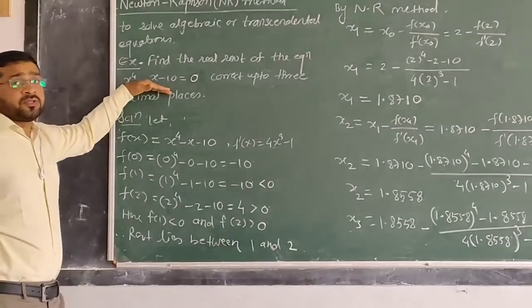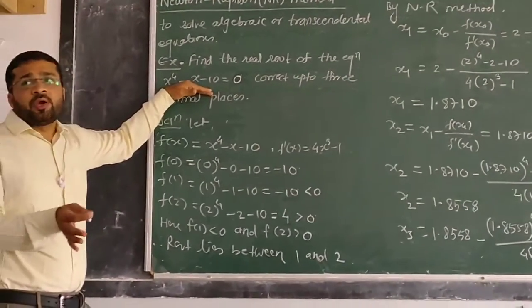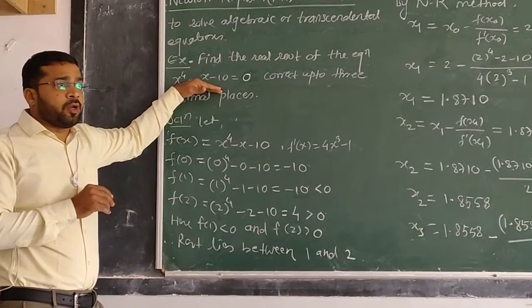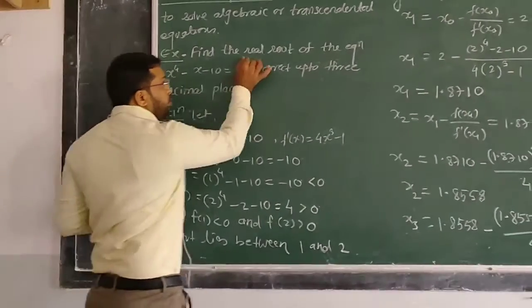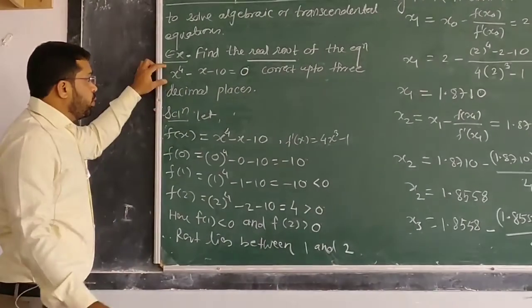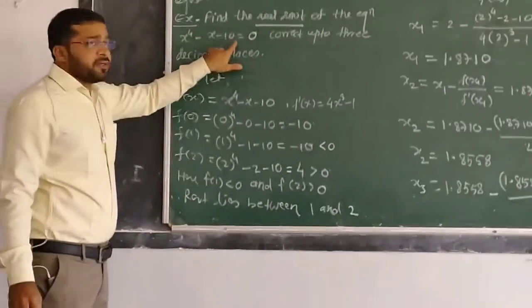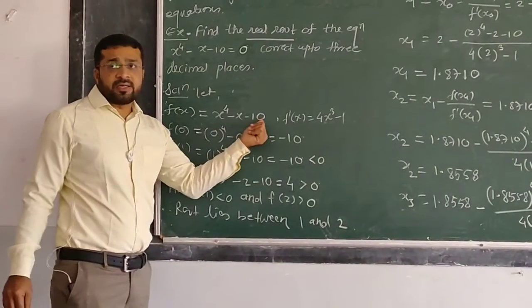We don't have any direct method to get the root of this fourth degree polynomial, so we will do it by Newton-Raphson method. We will find the real root. We will take this left-hand side as a function of x: f(x) = x^4 - x - 10.